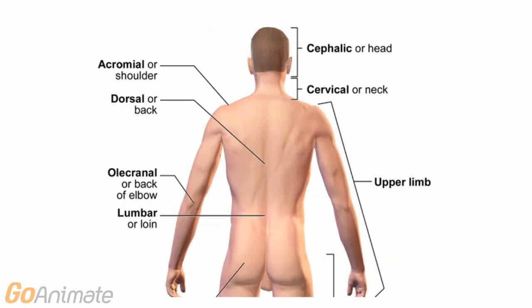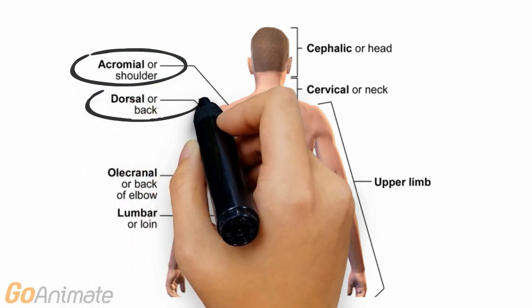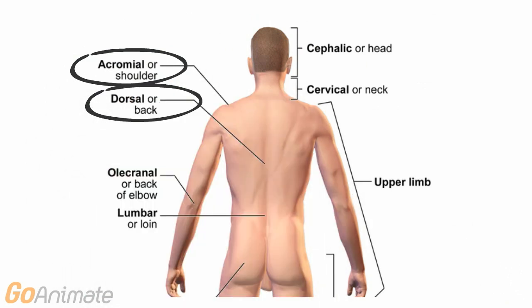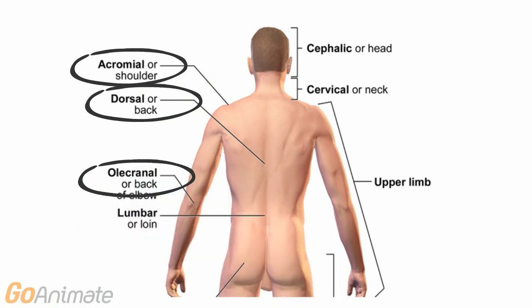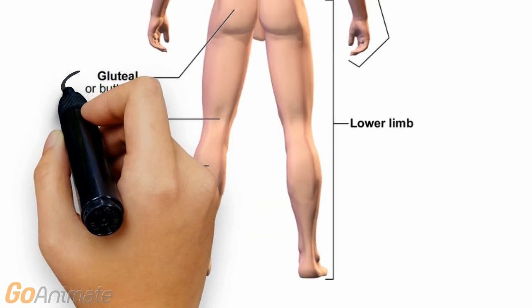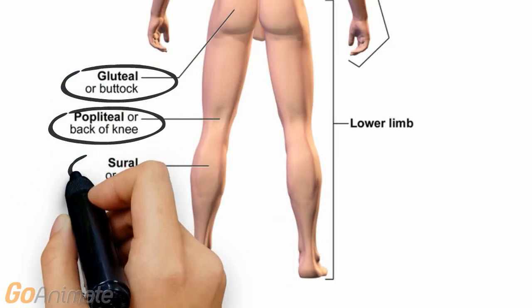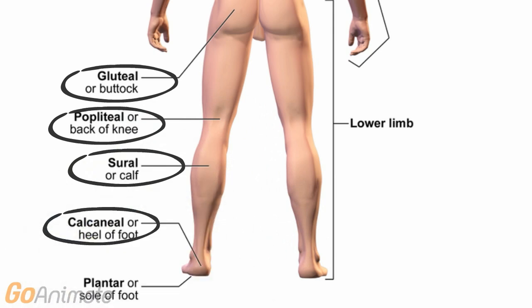Some terms for the back of the body include the acromial or shoulder region, the dorsal or back of the body, the olecranal or back of the elbow, and the lumbar region or low back. We also have the gluteal, popliteal, sural and calcaneal or heel regions. The sole of the foot is called the plantar region.